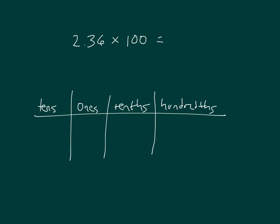In much the same way, we can multiply by 100. I'm going to have to make one more place value. So first we place 2 and 36 hundredths into the place value chart. The 2 is in the ones place, the 3 into the tenths place, and the 6 into the hundredths place.